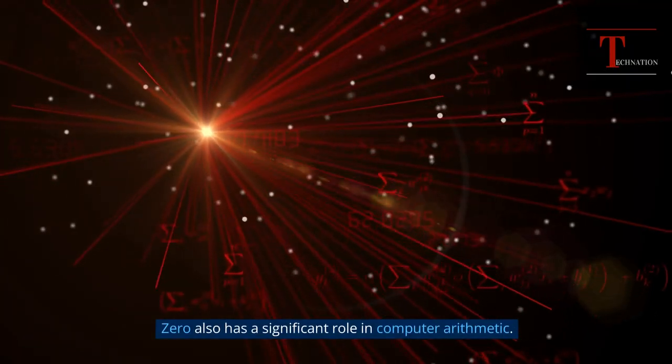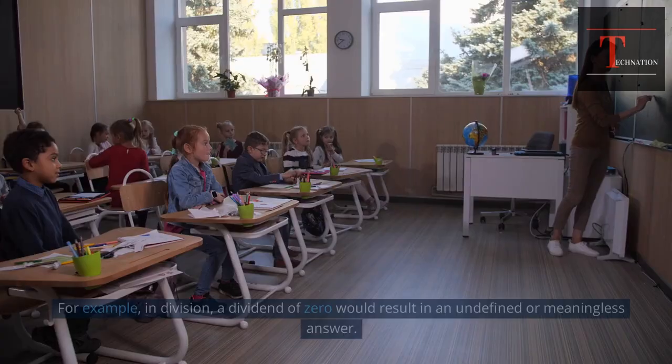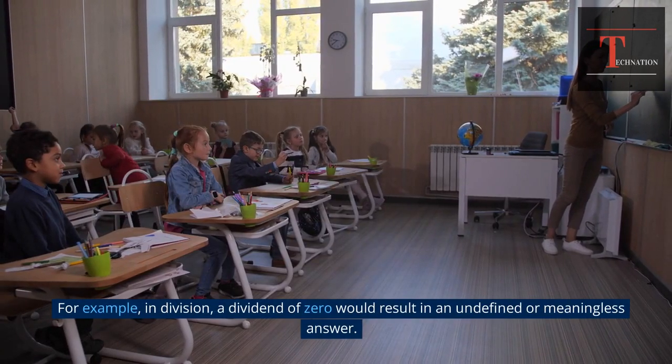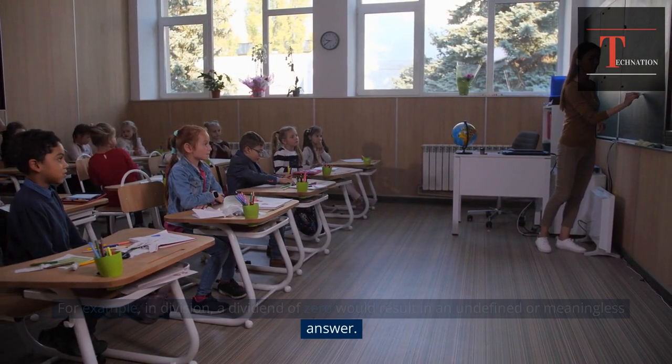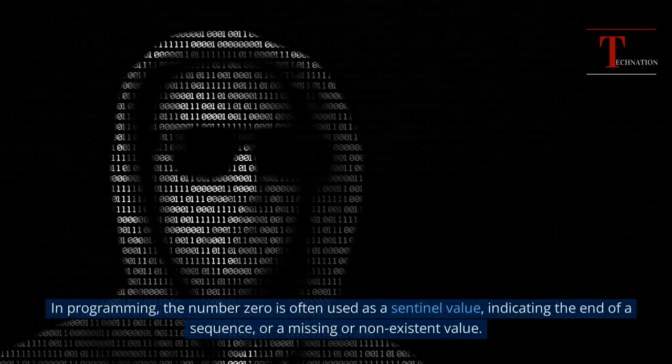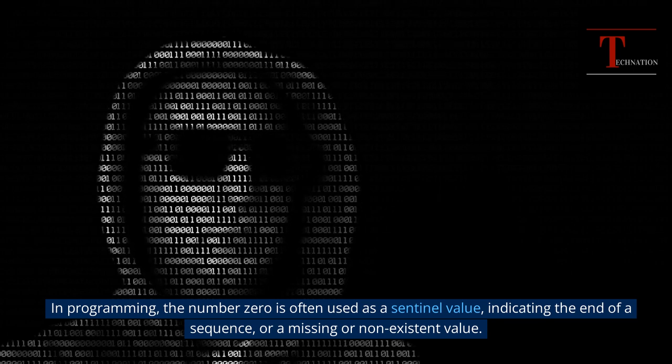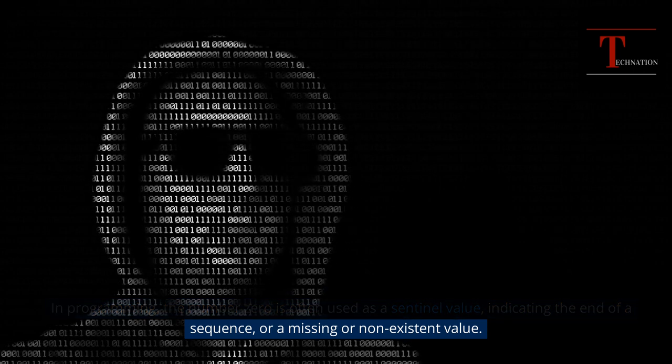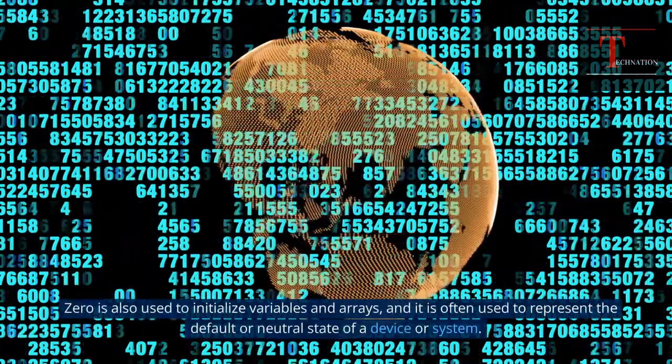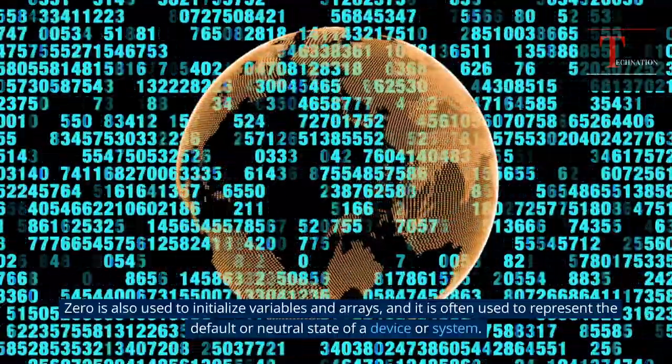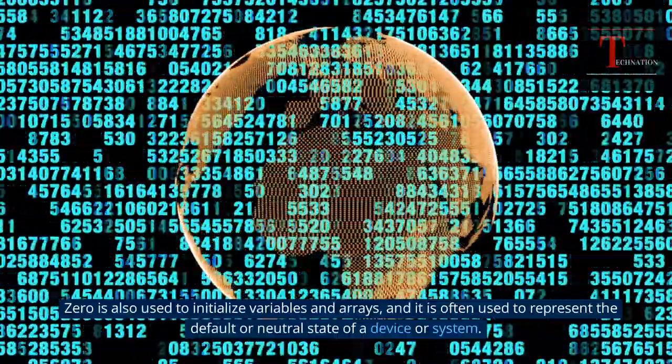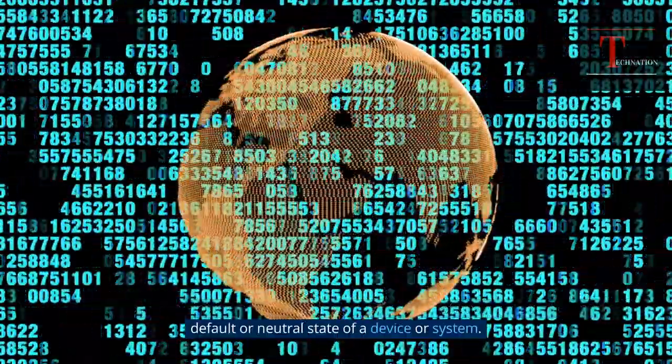Zero also has a significant role in computer arithmetic. For example, in division, a dividend of zero would result in an undefined or meaningless answer. In programming, the number zero is often used as a sentinel value, indicating the end of a sequence or a missing or non-existent value. Zero is also used to initialize variables and arrays, and it is often used to represent the default or neutral state of a device or system.